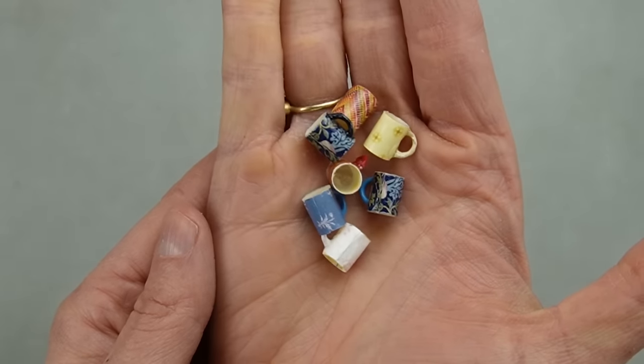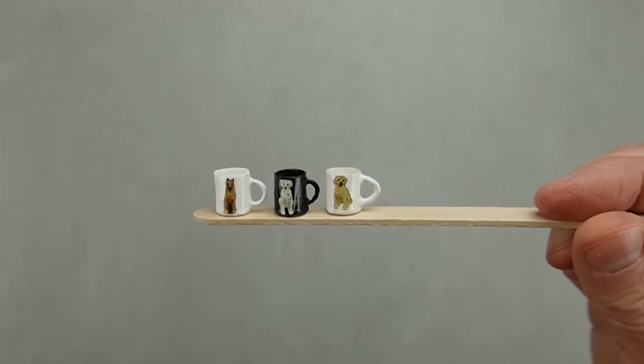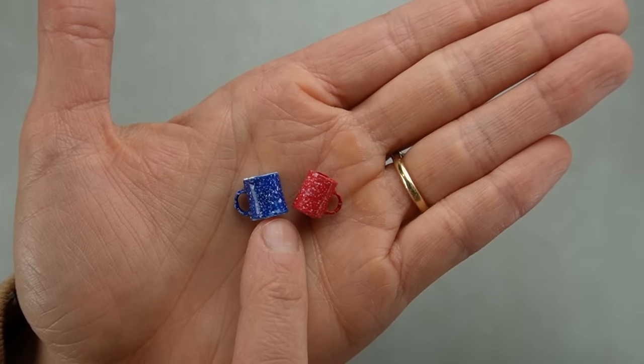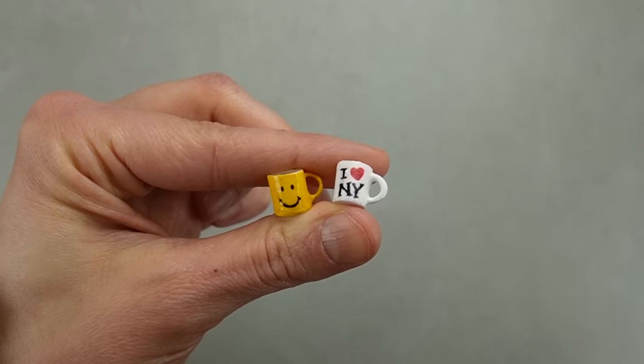Learn how to make dollhouse miniature mugs using paper, paper clips, yarn, and magazine cutouts. I'm focusing on 1:12 scale mugs, but you can use the same technique for other scales.